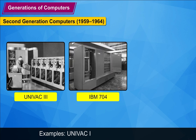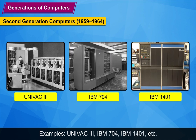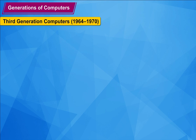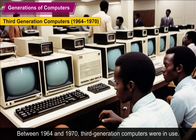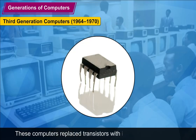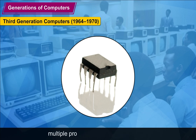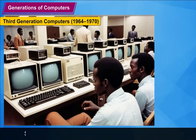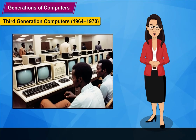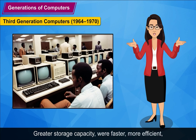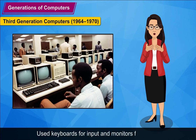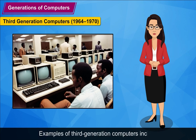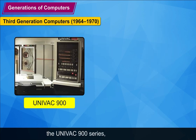Examples of second generation computers include UNIVAC 3, IBM 704, and IBM 1401. Third Generation Computers (1964–1970): Between 1964 and 1970, third generation computers were in use. These computers replaced transistors with integrated circuits (ICs), also known as chips. They featured operating systems that allowed multiple programs to run simultaneously. Characteristics include greater storage capacity, faster and more efficient, and smaller in size than second generation computers. They used keyboards for input and monitors for output. Examples include the UNIVAC 900 series and IBM 360.